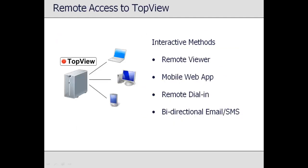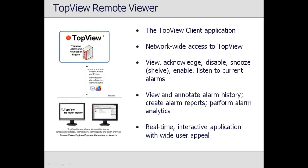Although Top View is often the one initiating communication to users, there are multiple ways users can interactively communicate with Top View: over the network through desktop and mobile applications, by calling Top View with a phone, and through bidirectional email and SMS communication. The Remote Viewer is the Top View client application for Windows desktops. Users with network access to the Top View computer can remotely view, acknowledge, disable, snooze, hear, and annotate alarms. Alarm history can be queried, and the user can perform alarm analytics on the history.